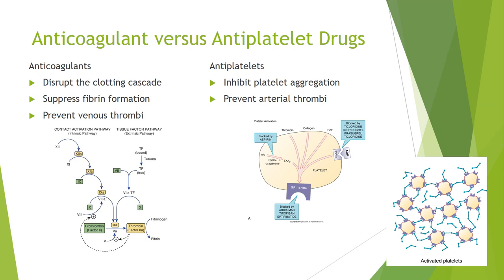Anticoagulants have the word coagulant in there, so we're referring to the coagulation cascade. The whole point of this coagulation cascade is that it produces fibrin. Fibrin is what forms that mesh involved in the formation of a blood clot, often at the site of an injury. So anticoagulants prevent formation of fibrin, which in turn prevents formation of those venous blood clots.